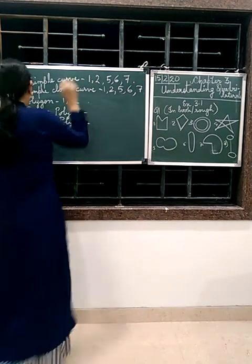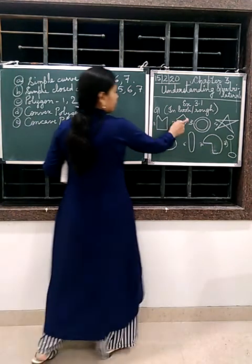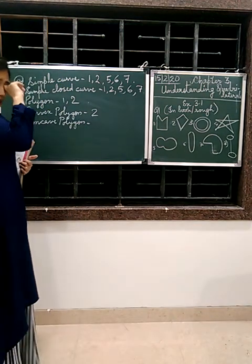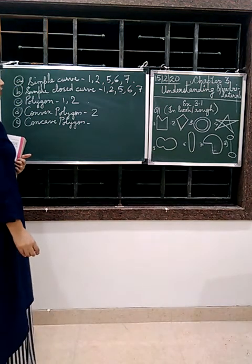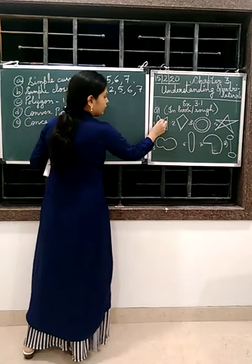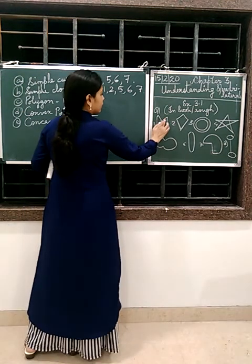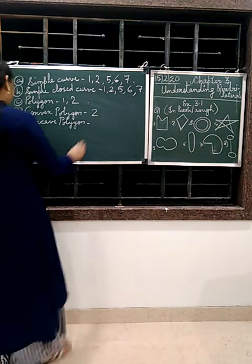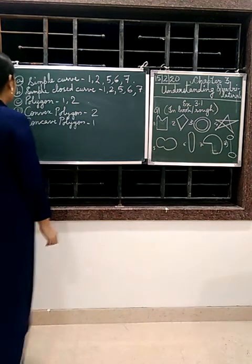Then comes the convex polygon. So only 1 is the convex polygon, that is the second one. In this case, all the angles are smaller than 180 degrees. You know why? Because we have to check only from 1 and 2. In 1 you check, this is more than 180 degrees. So this is not convex, this is concave. So only the second one. Then concave will be only 1, just now I explained, because this angle is greater than 180 degrees.